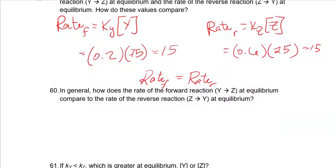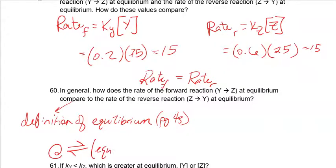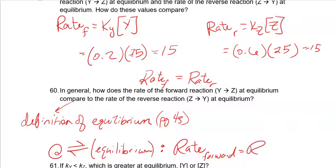So in general, how does the rate of the forward reaction — y going to z at equilibrium — compare to the rate of the reverse reaction, z going to y at equilibrium? This right here is simply the definition of equilibrium, which we talked about back on page 43. The double arrows are another sign for equilibrium. The rate of the forward reaction equals the rate of the reverse. And that's what we're seeing here.